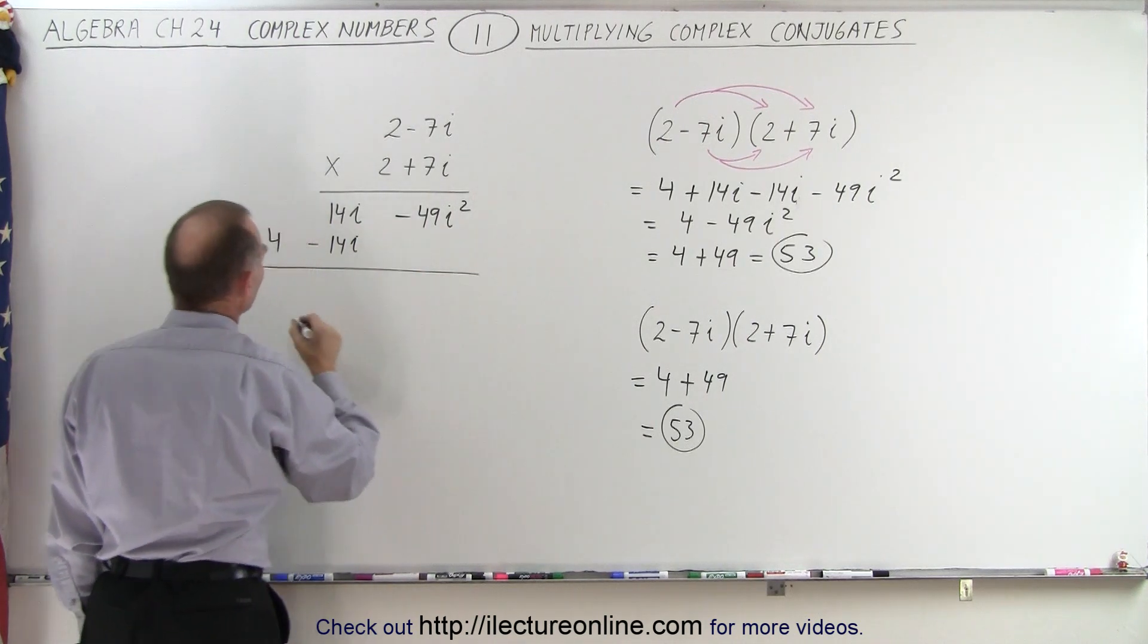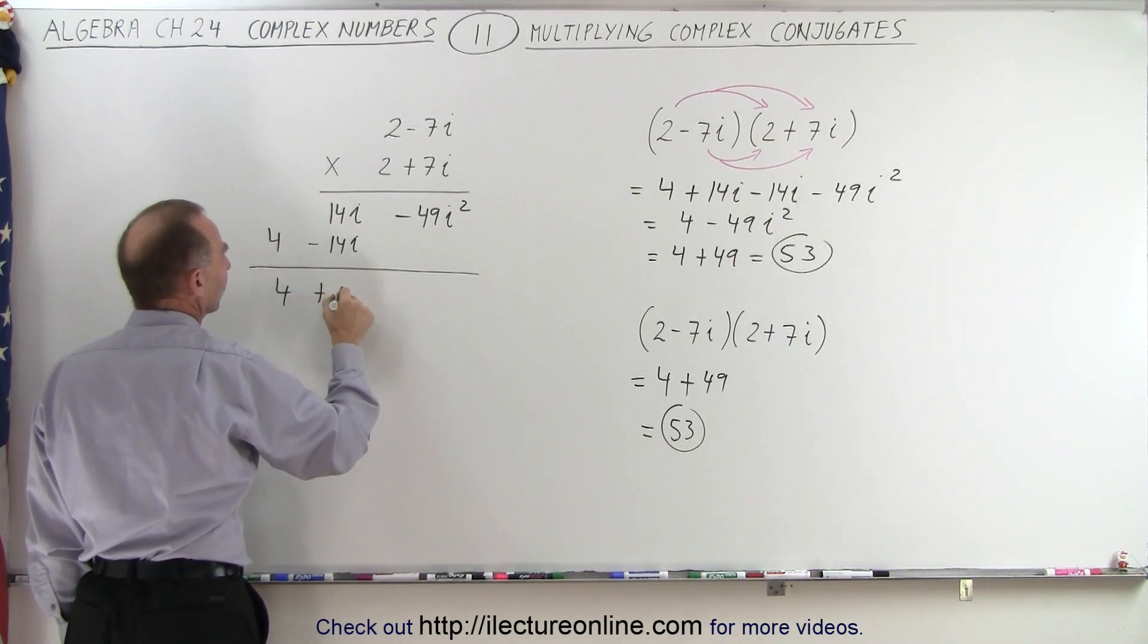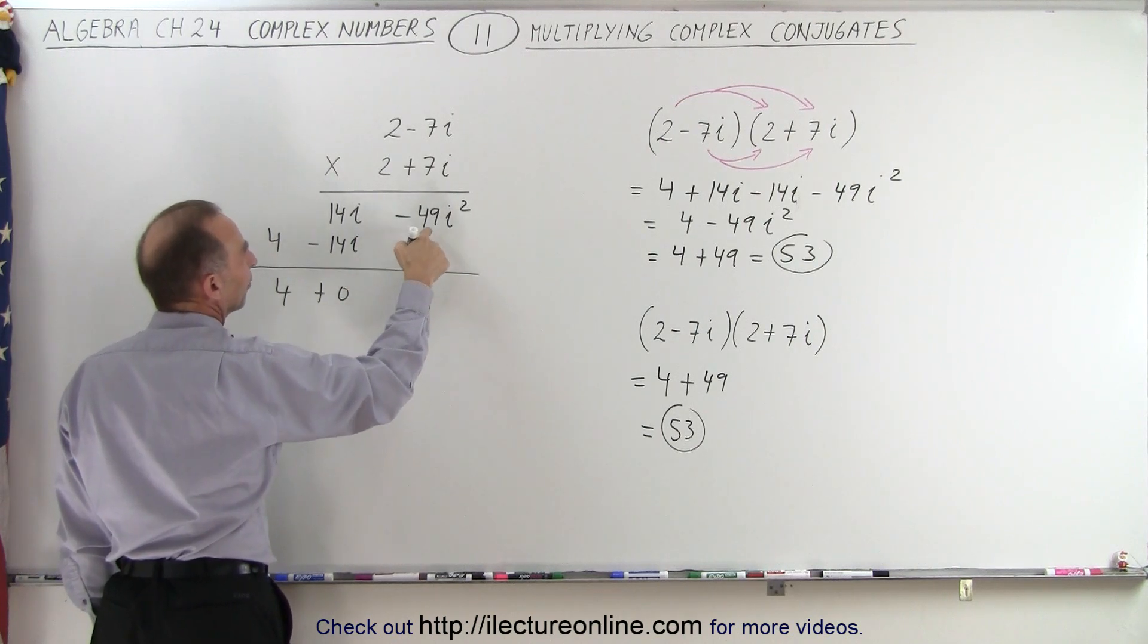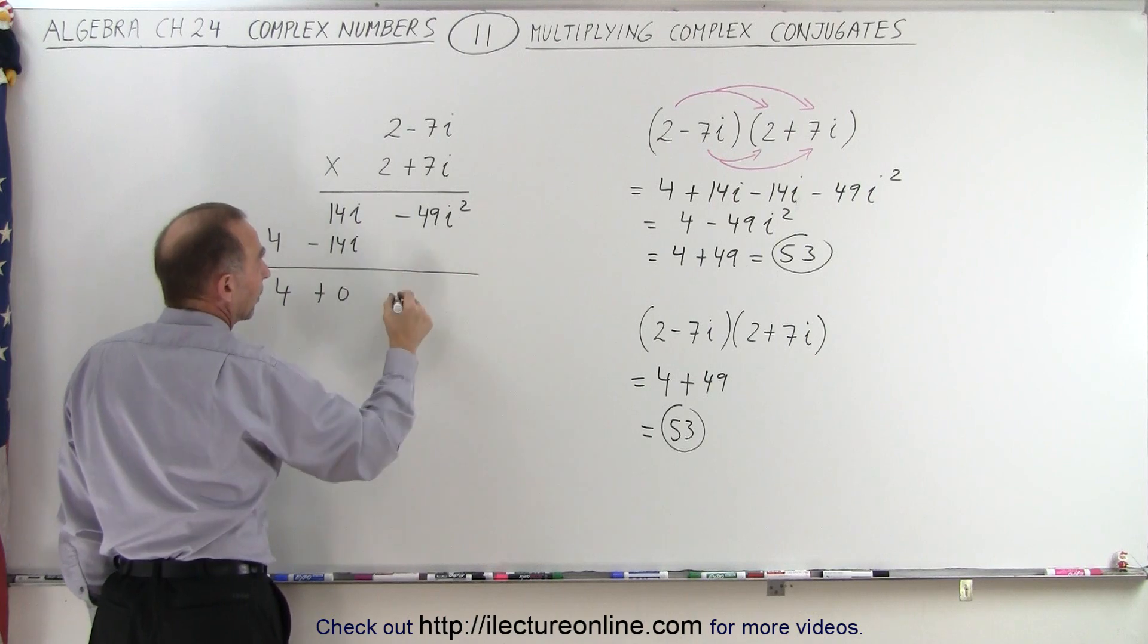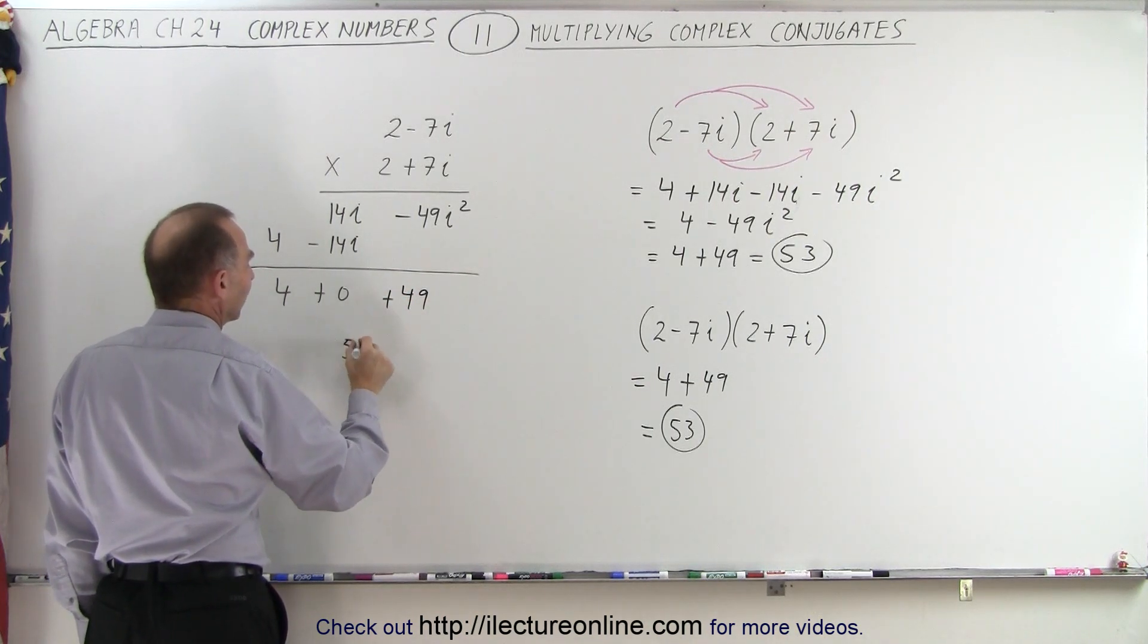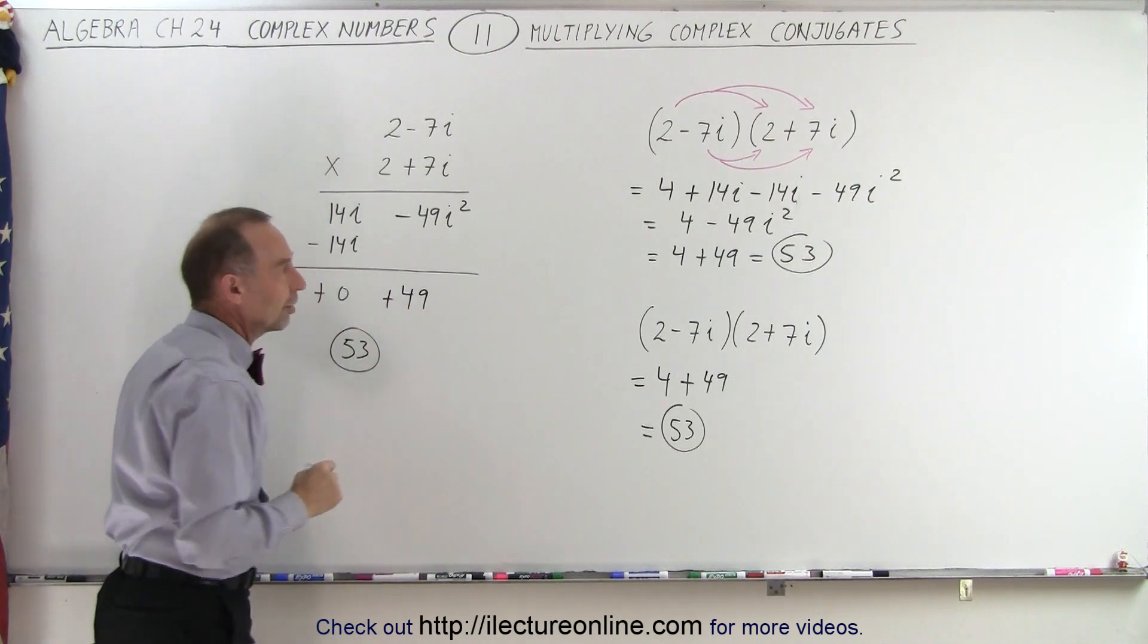When we add all those together, we get 4 plus 0. The middle term drops out. And here you get 49, negative 49 times i squared, but i squared is negative 1. That becomes plus 49, and so that becomes 53 as the final result.